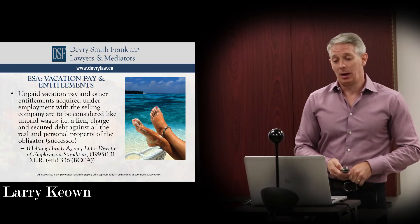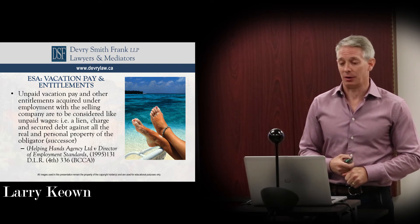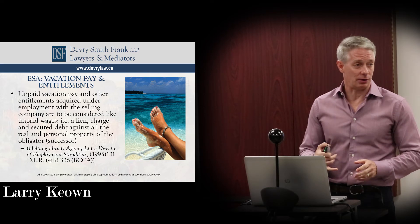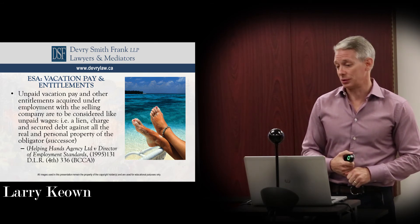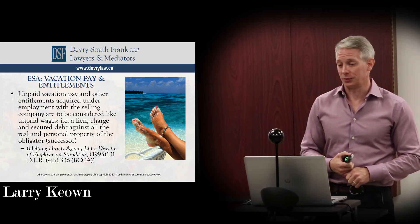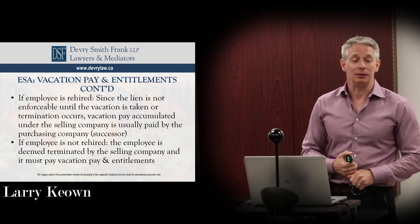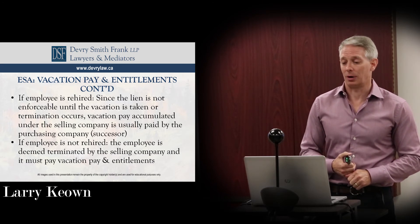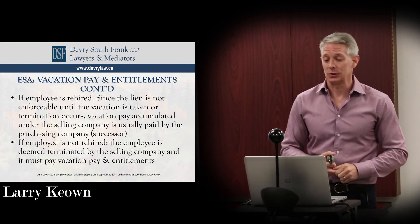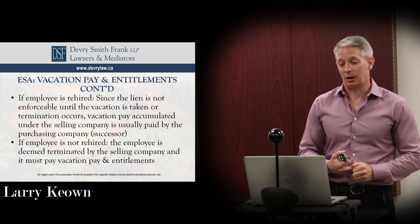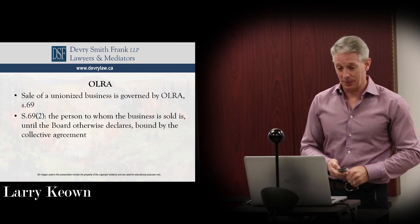Turning to a few other practical matters: in a business sale transaction, unpaid vacation pay is considered unpaid wages and forms a lien and charge against the property of the obligor or the successor, which the successor must ultimately pay. If the employee is rehired by the successor, the lien isn't immediately enforceable — similar to ESA entitlements — it becomes payable on termination or when the vacation pay entitlement kicks in. If the employee is not rehired, they are entitled to their vacation pay as well as their ESA entitlements.